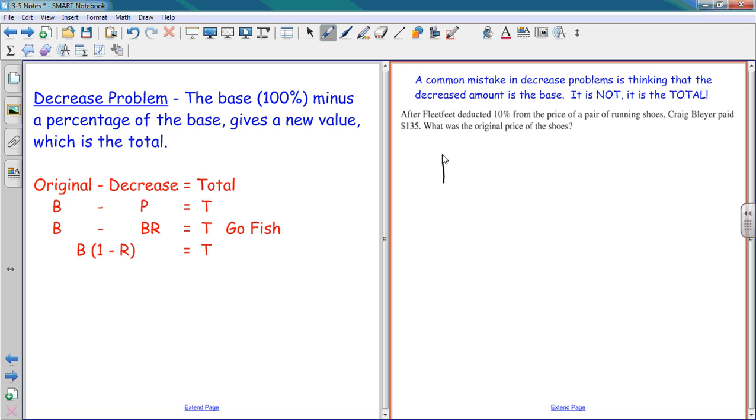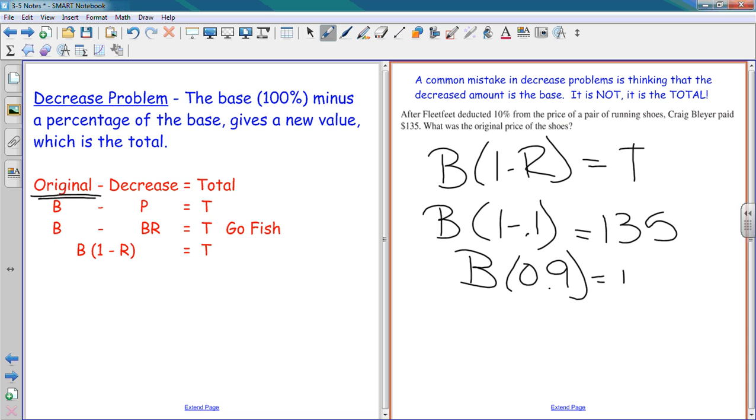We have a pair of shoes for $135. Those are 10% off the original price. I'm going to use my formula: B times 1 minus R equals T. My original price is going to be my B. Your sale price is going to be your T. That's the common mistake - to switch the B and the T in the decrease problem. Be very careful. I don't know my B. My rate is 10% or 0.1, so B times 0.9 equals 135. Divided by 0.9, the original price of the shoes was $150.